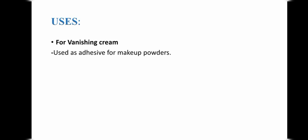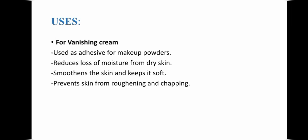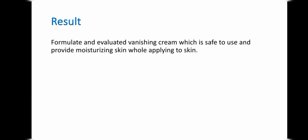Uses of vanishing cream: used as an adhesive for makeup and powders, reduces loss of moisture from dry skin, smooths the skin and keeps it soft, and prevents skin from roughening and chapping. As a result, we obtained a proper vanishing cream which is safe to use and provides moisturizing properties when applied to the skin.